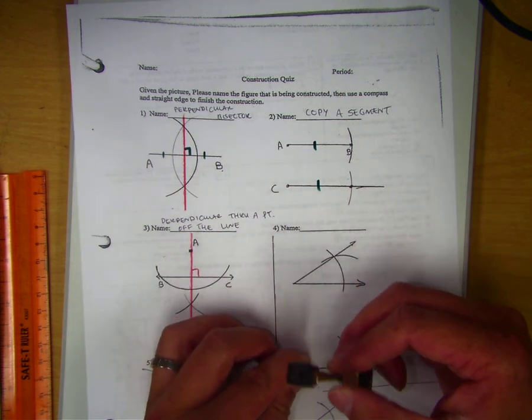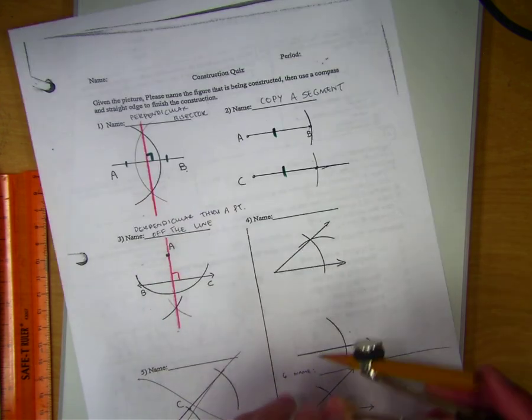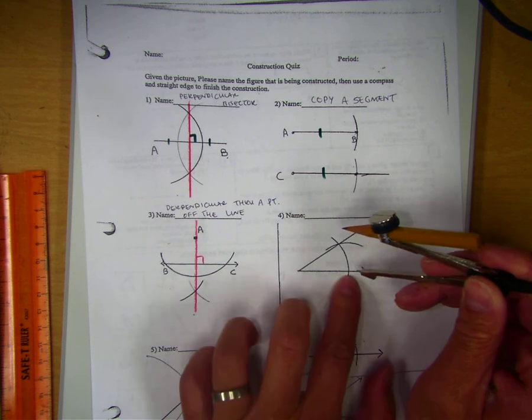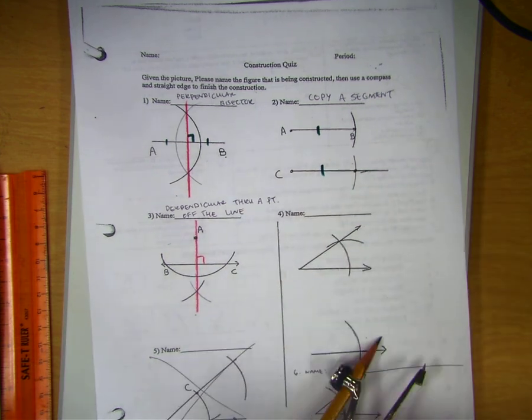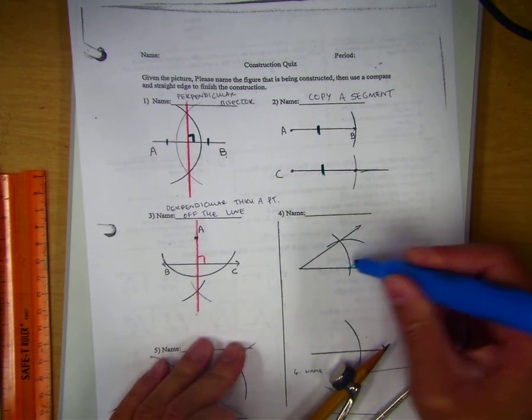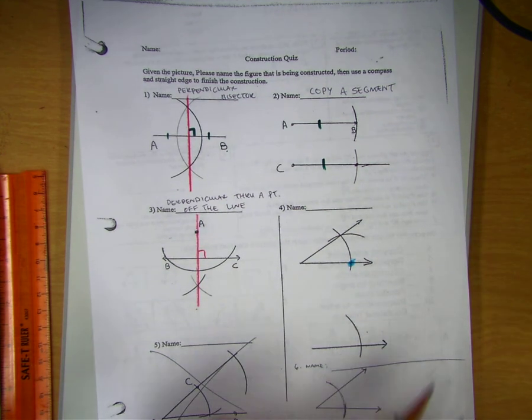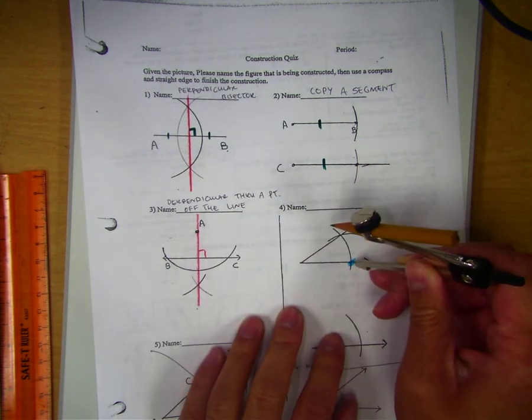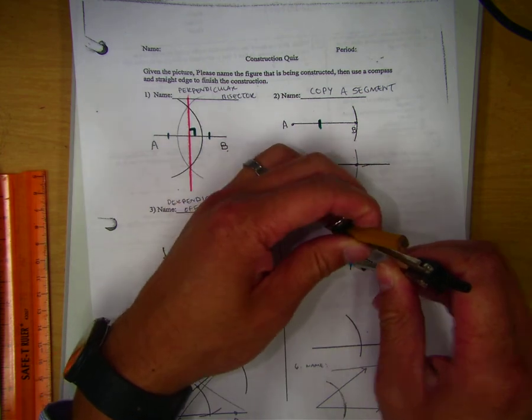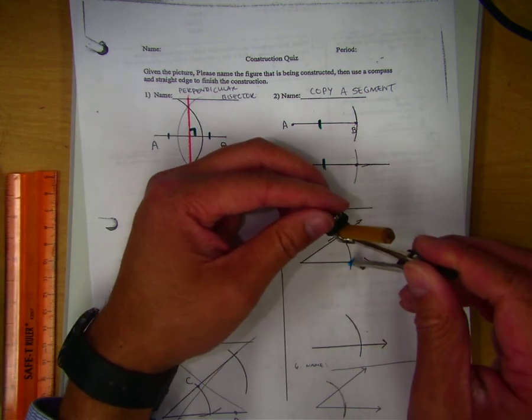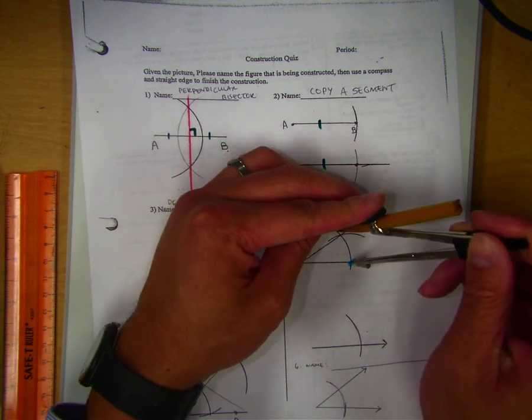And then they drew this other arc right here. And then you move right here to this intersection. I'm putting a point there so you can see where I'm going. And then here, you're measuring the angle.